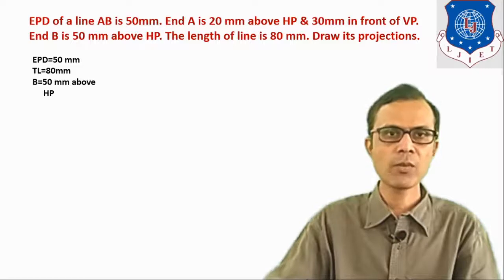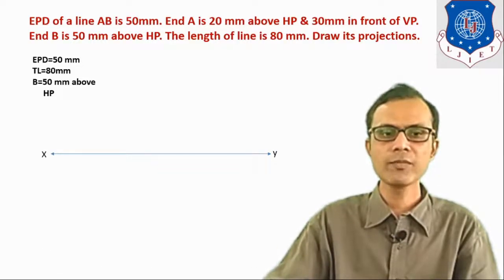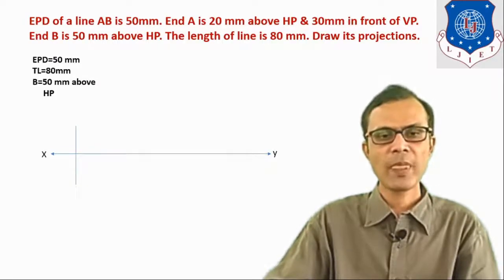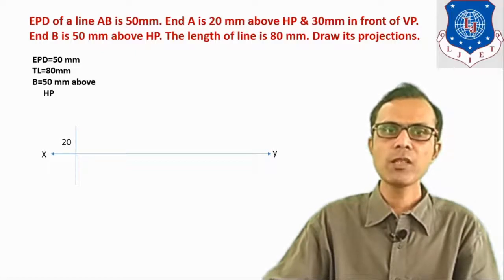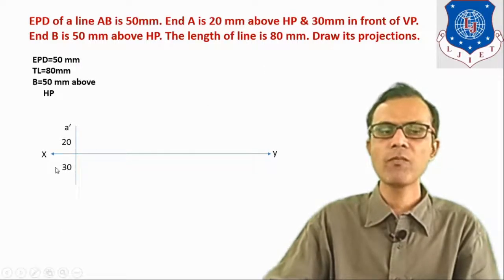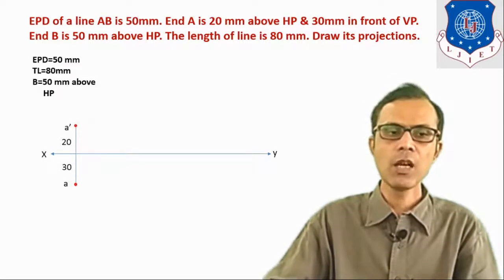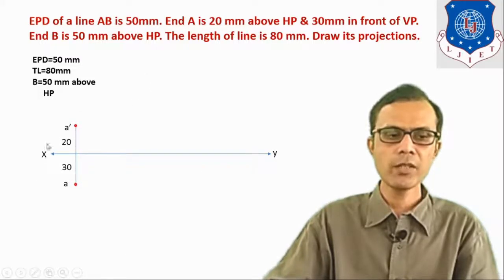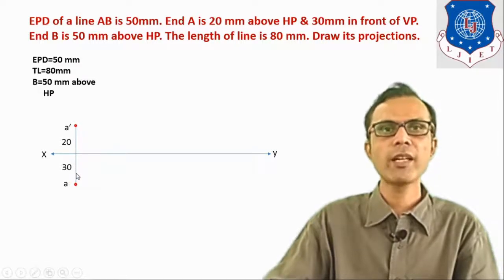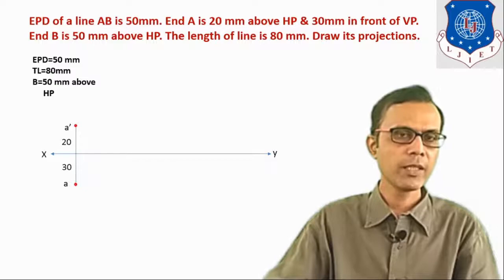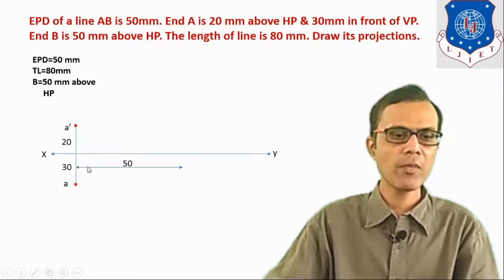Now we can start to draw the projection. First draw the reference line XY and draw a projector for end A. Since A is 20 mm above HP, take 20 mm above XY line — that is A'. Since A is 30 mm in front of VP, take 30 mm below XY line — that is point A. We now have A' and A. For end B, the projector is at a distance of 50 mm from this projector, so take 50 mm and draw another projector.